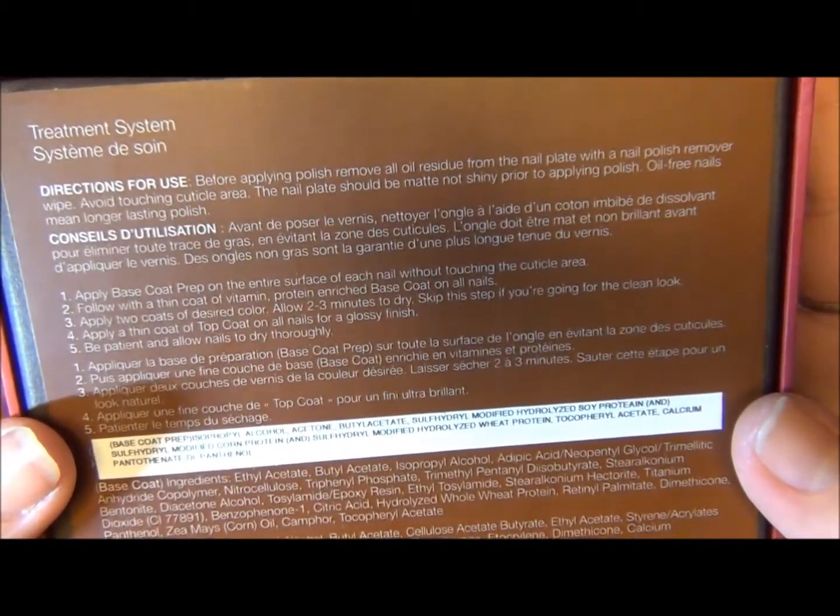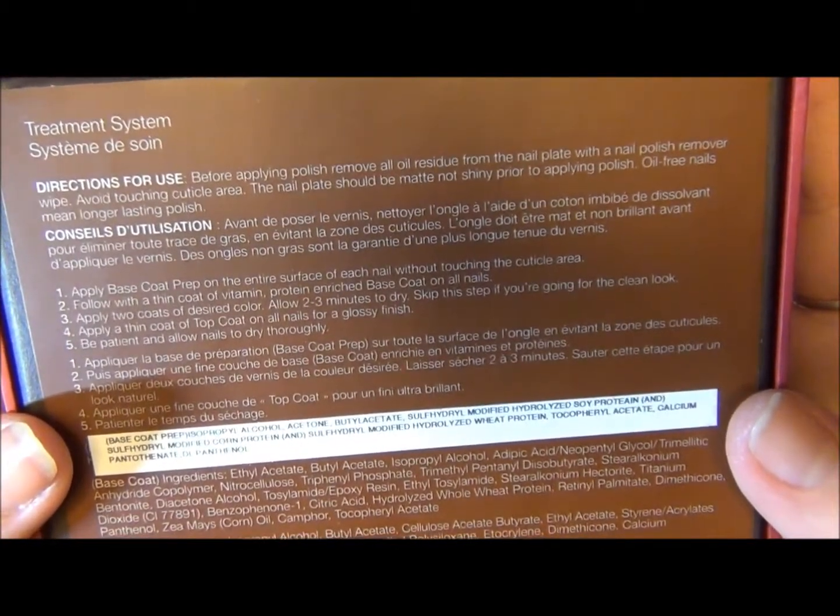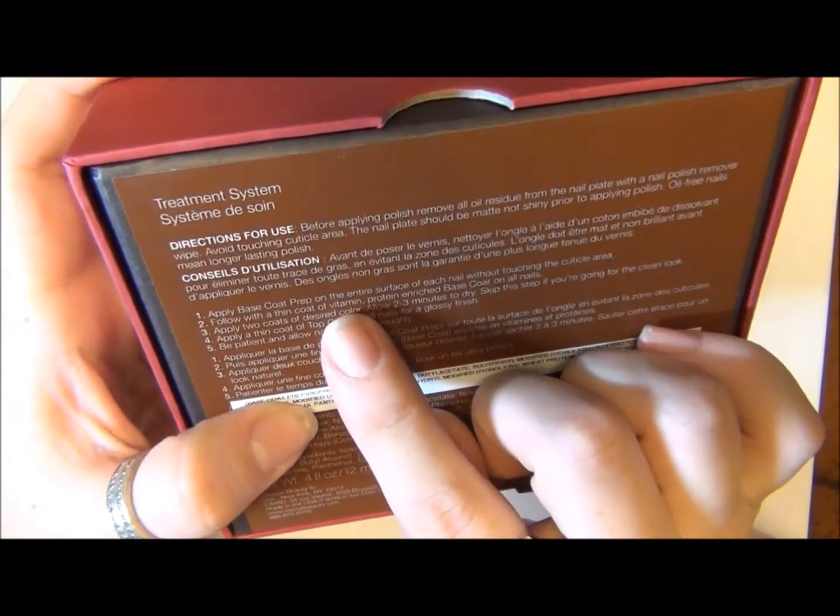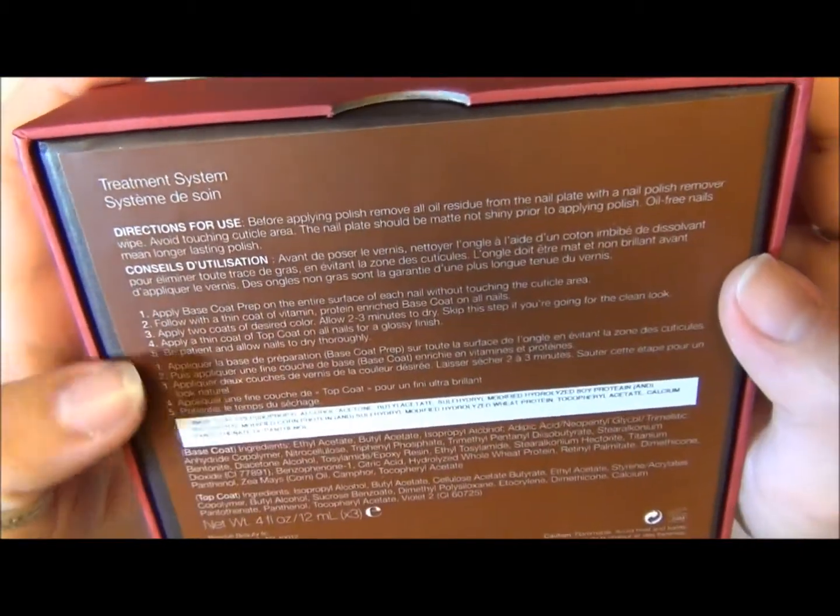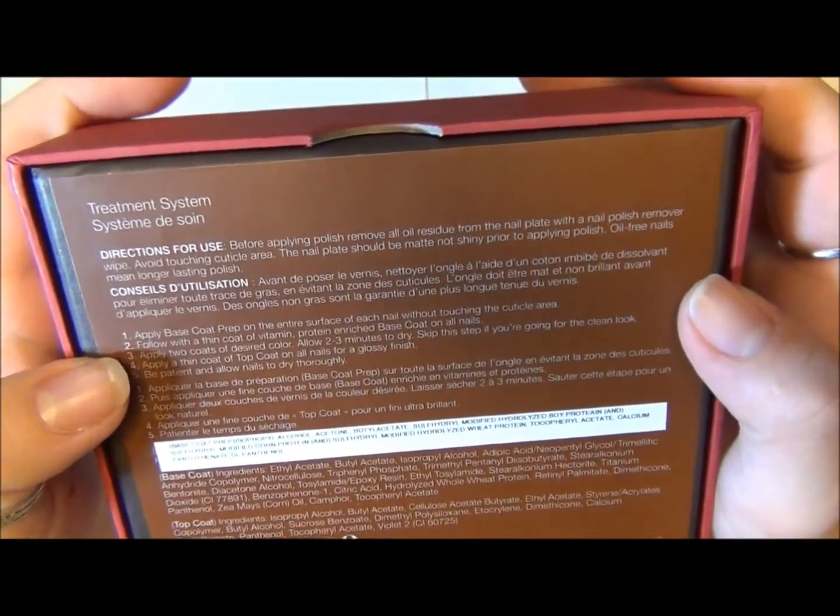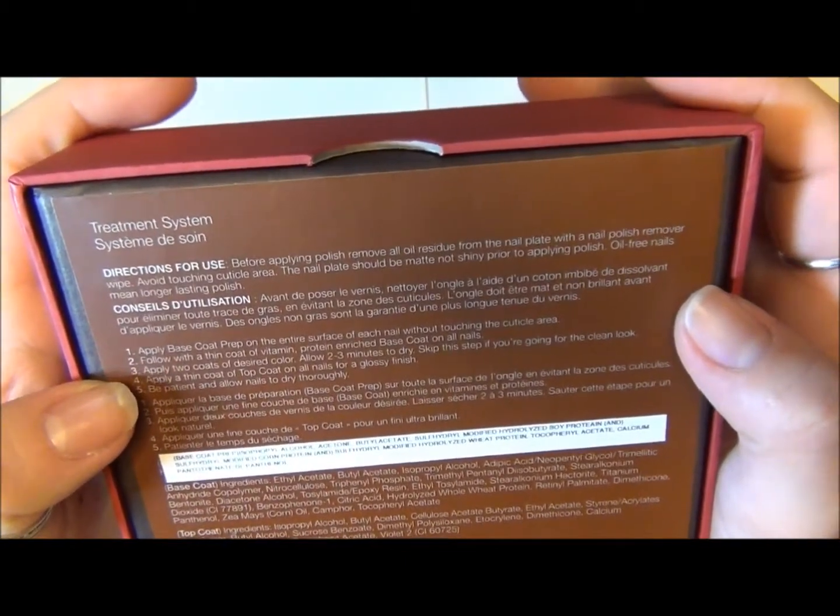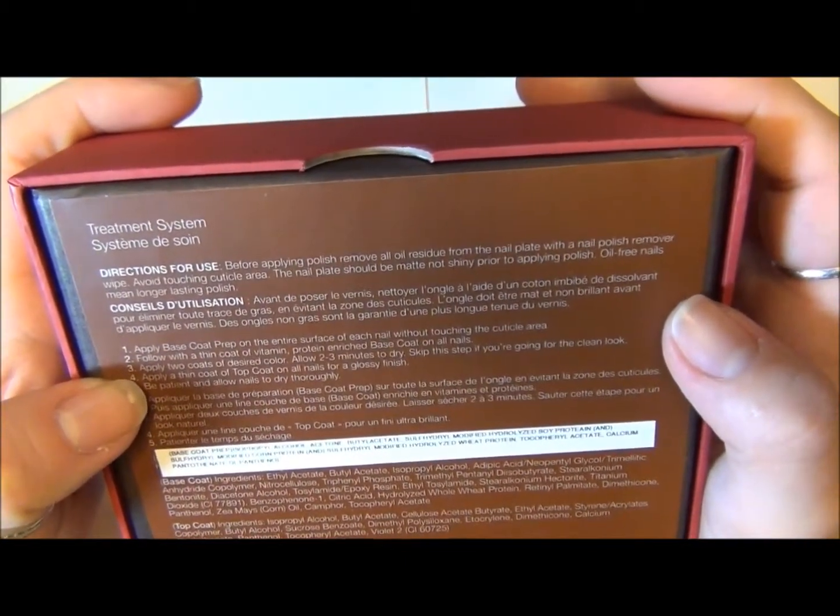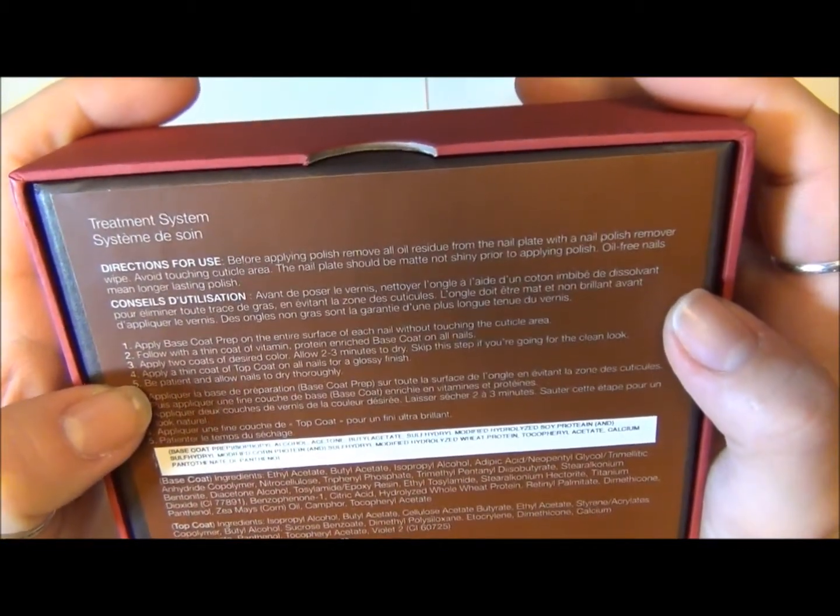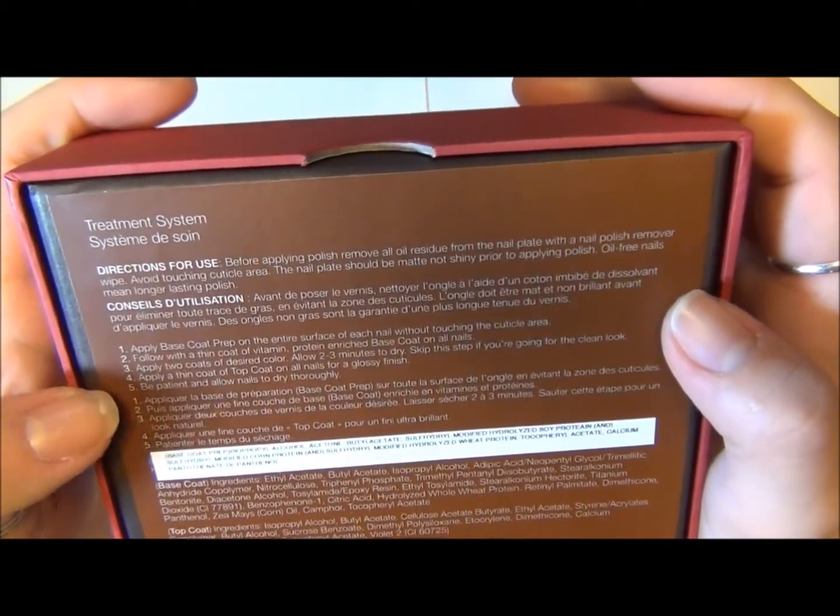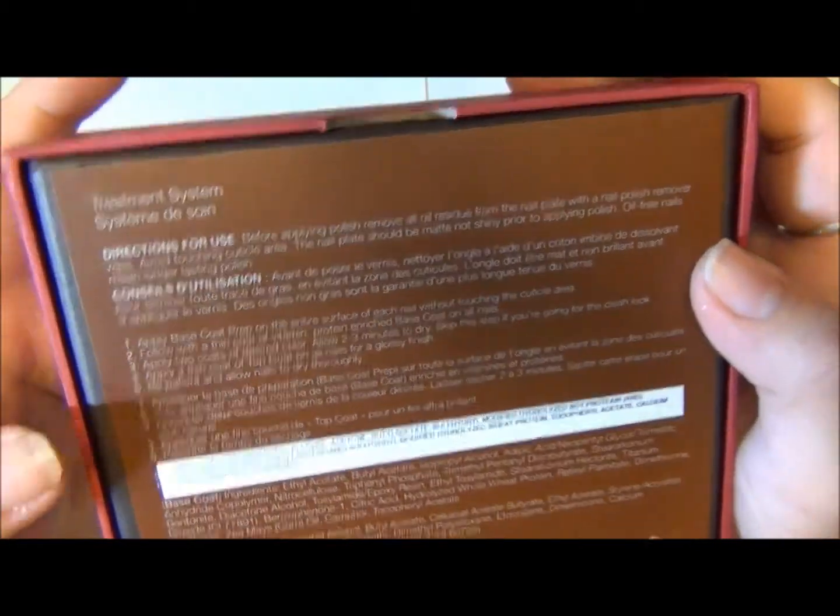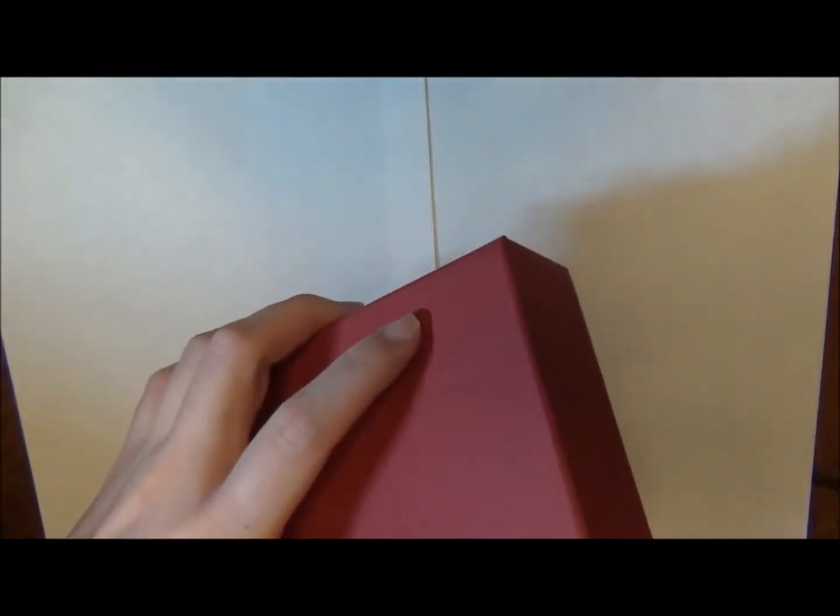These are the directions. So I have to apply a base coat prep, and then I follow with a thin coat of base coat. Then I do two coats of a color, and then I do a top coat.